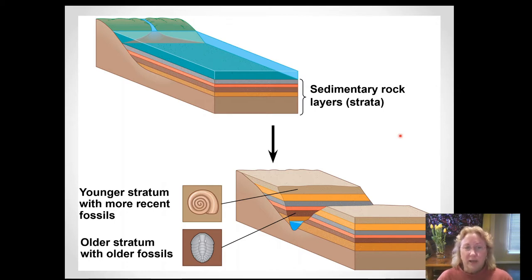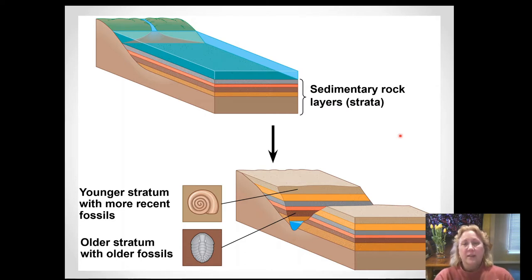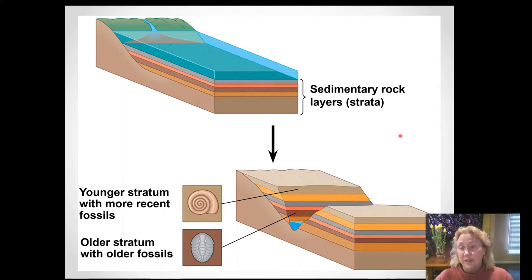Occasionally, geologic processes reverse those layers or flip them over. An asteroid impact or a large volcanic eruption can flip the layers so we get older to younger and then younger to older again on top — but that's more unusual. These layers, although laid down horizontally, get slanted with time. You can find examples in the Appalachians and the Great Smoky Mountains where layers are tipped at a 45-degree angle.